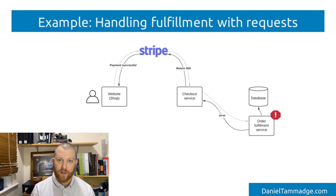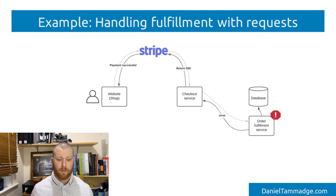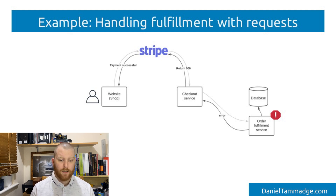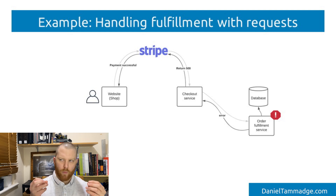But what happens if the fulfillment service encounters an error or it's unavailable, and you start to have errors bubbling upstream to the checkout service which is handling the webhook from Stripe, leading to your system not being able to process the order correctly? This could mean that the customer's account information may not reflect what has happened, leading to an increase in support requests, customer dissatisfaction, and an impact on the brand. With that in mind, how can you make your system more resilient?